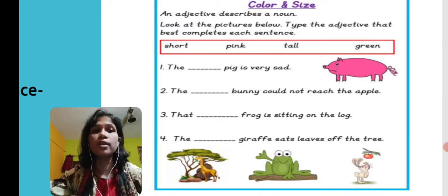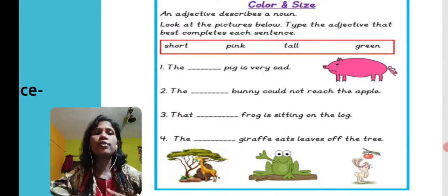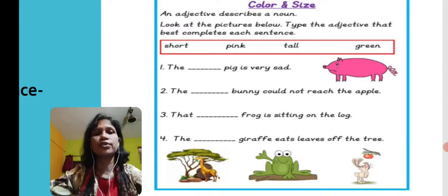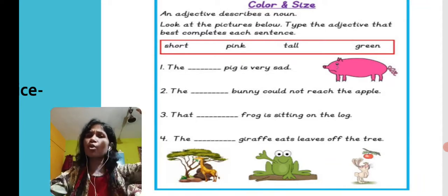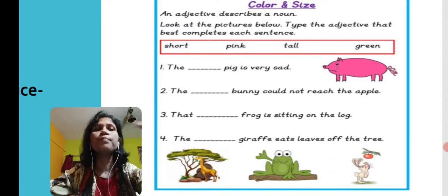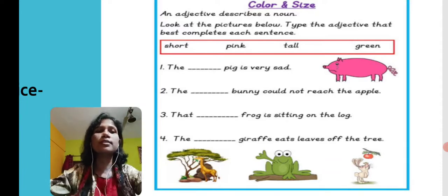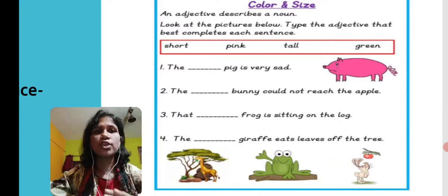Finally number four: The blank giraffe eats leaves off the tree. How is a giraffe? A giraffe is a very tall animal. So, the tall giraffe eats leaves off the tree. These are the adjectives—short, pink, tall and green—we have used in all four sentences given here.